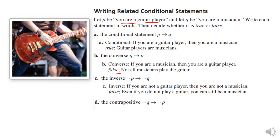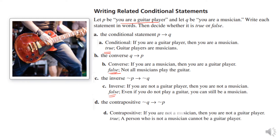Then the contrapositive. Notice we've got: true, false, and false so far. The contrapositive is the reverse of the converse, so this one says: if you are not a musician, then you are not a guitar player. That's true, because if you're not a musician at all, then you're not any kind of musician. So the main thing is you have to recognize each one for what it is.